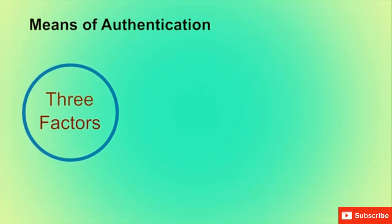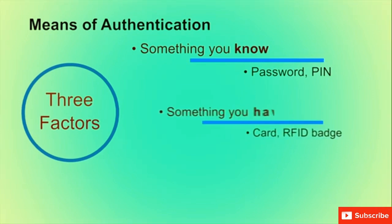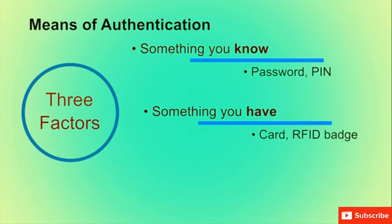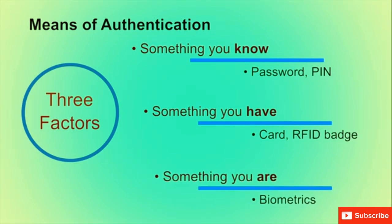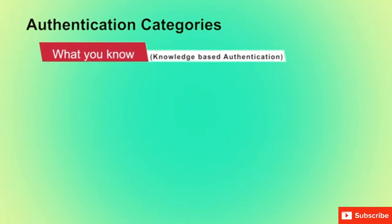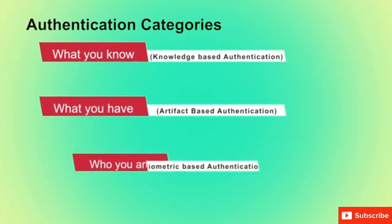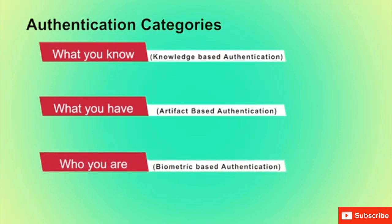Traditionally, there are three means of authentication: something you know (like a password or PIN), something you have (like an ID card or RFID badge), and something you are (like biometrics). All of these, if properly implemented, can provide secure user authentication. Authentication has been divided into three categories: knowledge-based authentication (what you know), artifact-based authentication (what you have), and biometric-based authentication (who you are). However, each category has its own problems — an adversary may guess or steal a password, forge or steal a token, or a user may forget or lose a password.